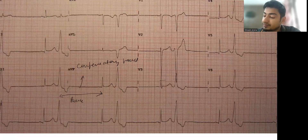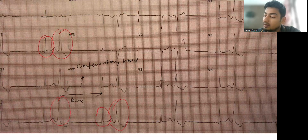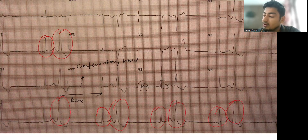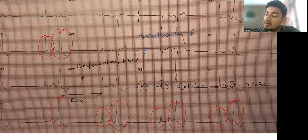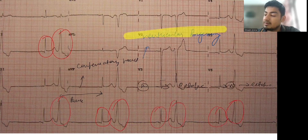The pattern is: normal QRS, ectopic, normal QRS, ectopic — repeating consistently. Every normal QRS is followed by an ectopic, followed by a normal QRS, then another ectopic. Since the ectopic is occurring at every second beat, this is known as ventricular bigeminy.